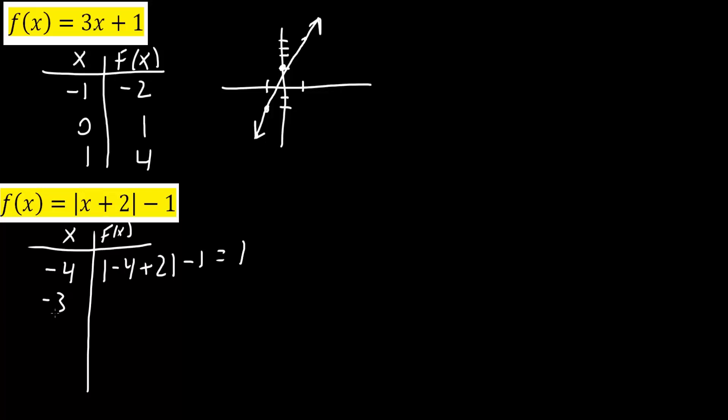Likewise, we do negative 3, negative 2, negative 1, and 0. So if it's negative 3, we plug it in, we would ultimately get 0. Negative 2, we plug it in, we would ultimately get negative 1. Negative 1, we plug it in, we would get 0. And 0, when we plug it in, we would get 1.